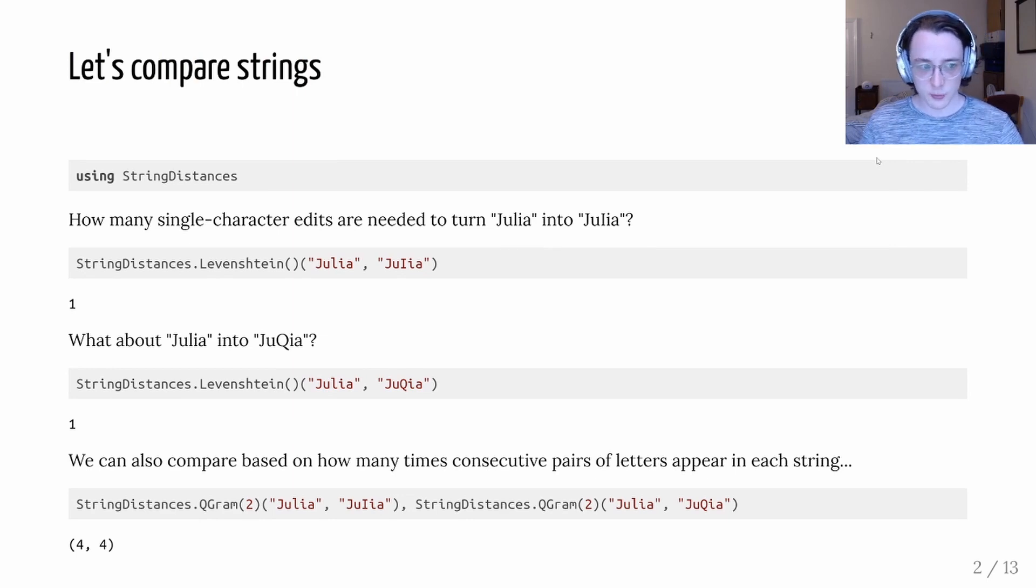So let's compare strings. One way we can do that is with the string distances package, which for example has the Levenstein distance that can insert how many single character edits you need to turn one string into another. If we do Julia and then Julia with a capital I instead of a lowercase l, it's just one edit.